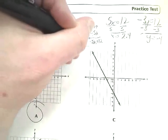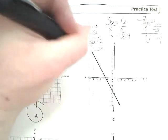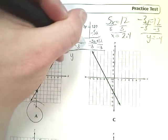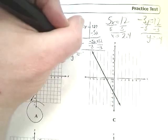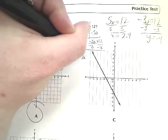Divide by negative 3. And you get y is equal to 5 thirds x minus 4.